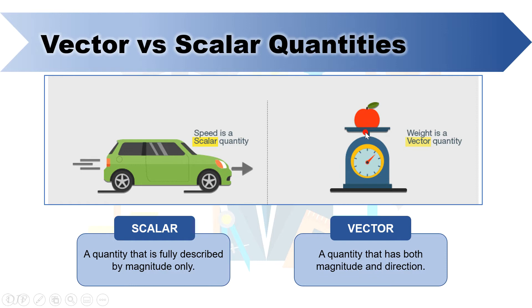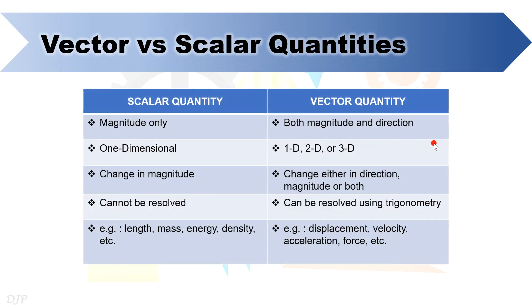To further see their difference, I made the following table, in where the first two rows are pretty much self-explanatory, but looking at the third row, this emphasizes that scalar quantity can only change in magnitude, while vector quantities can change either in direction, magnitude, or both.